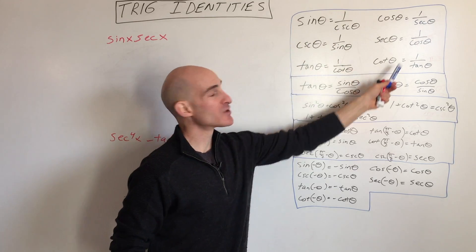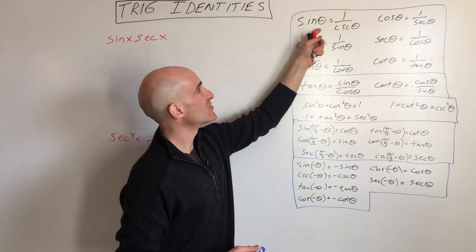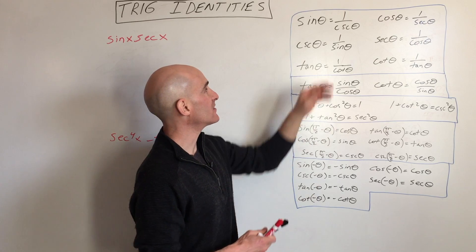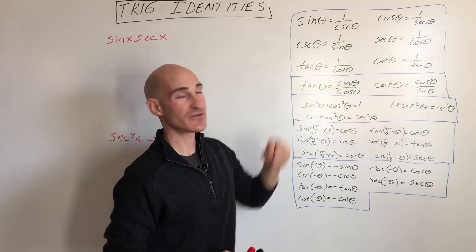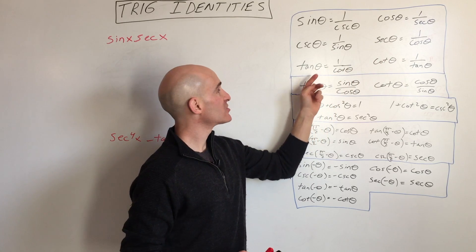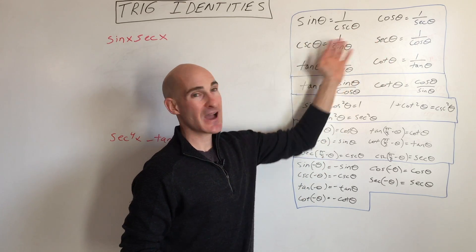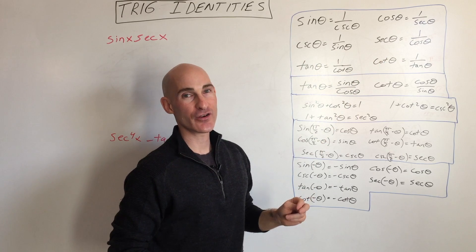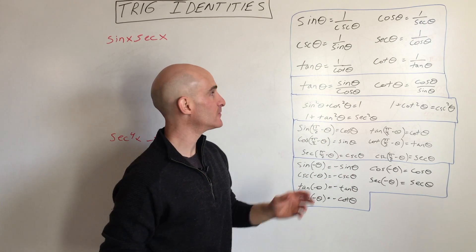These are called the reciprocal identities because sine is the reciprocal of cosecant, cosecant is the reciprocal of sine. Cosine and secant are reciprocals of each other, and tangent and cotangent are reciprocals of each other. You can see how they're paired up with one another, and that'll cut down on some of the memorization you'll need to do.